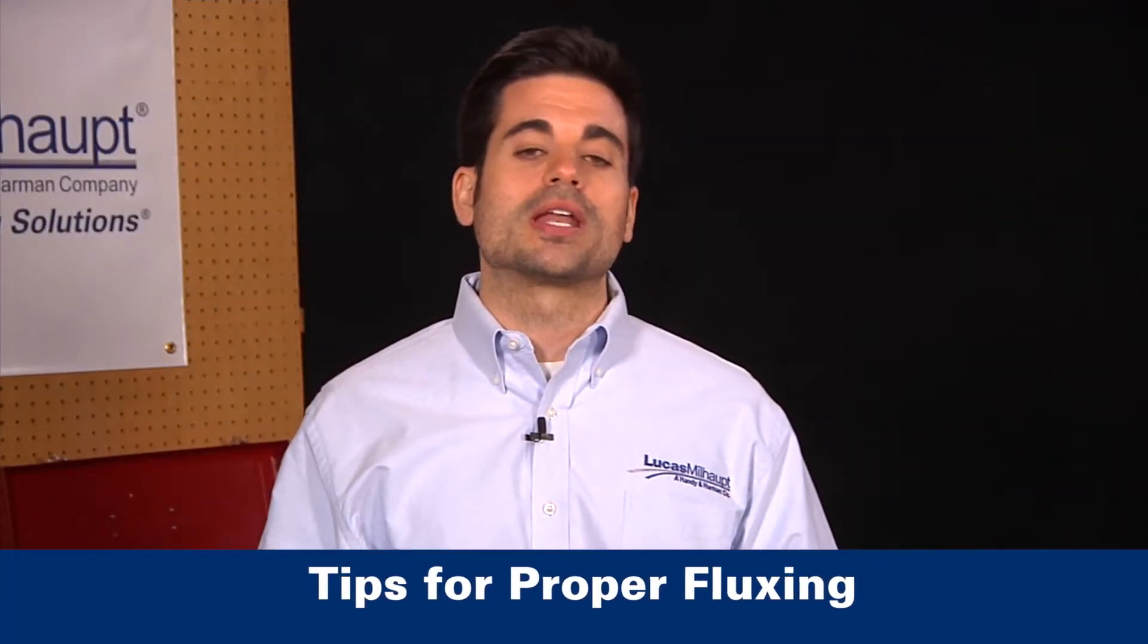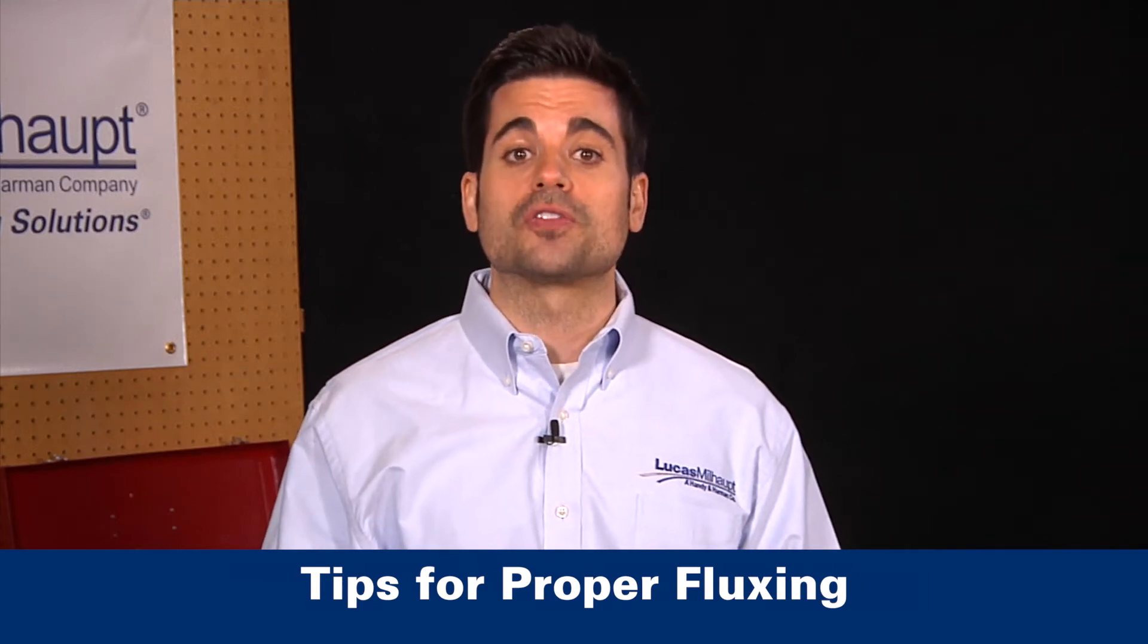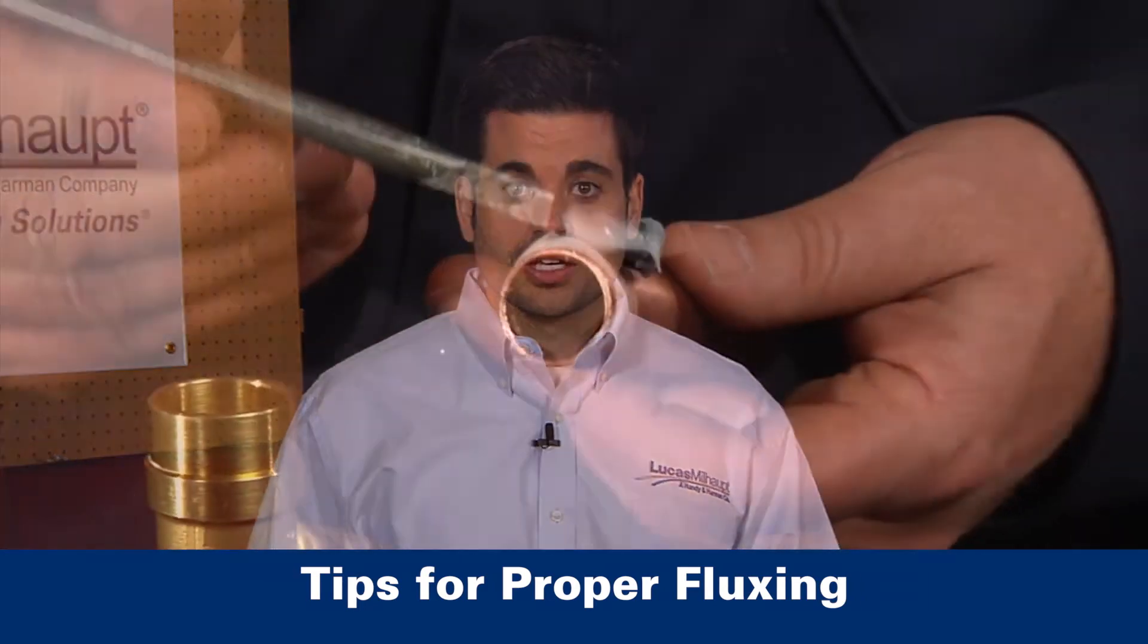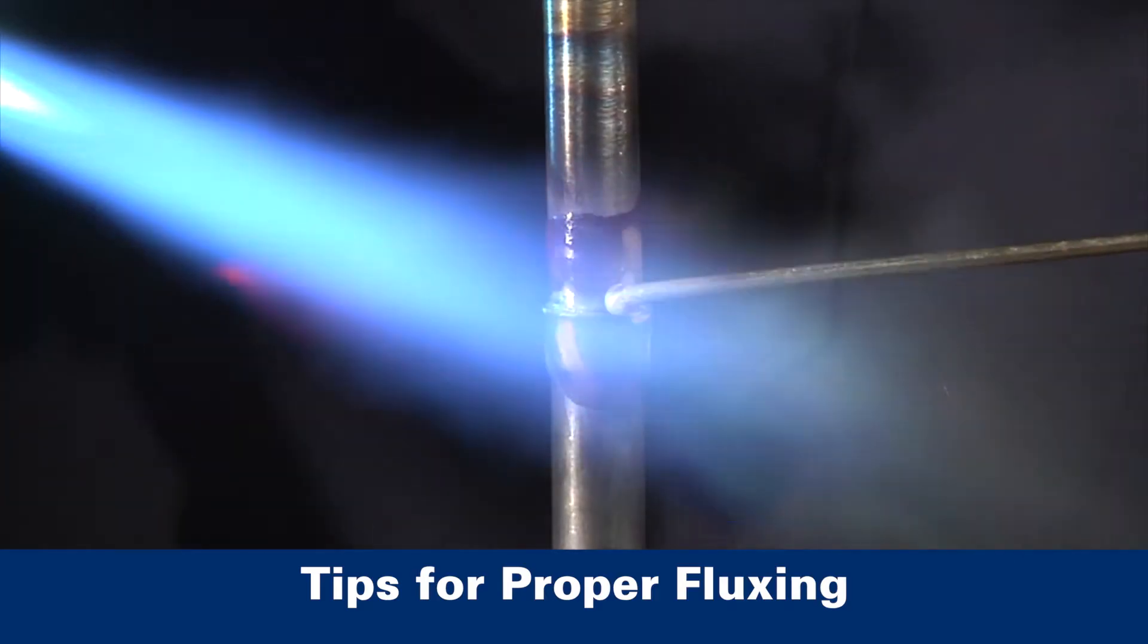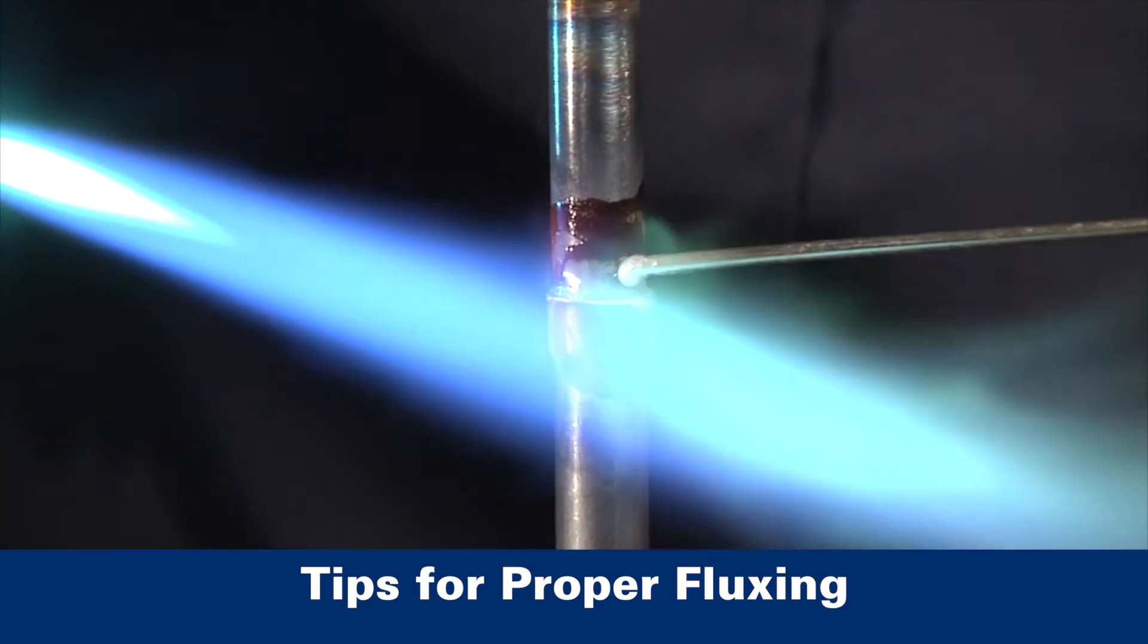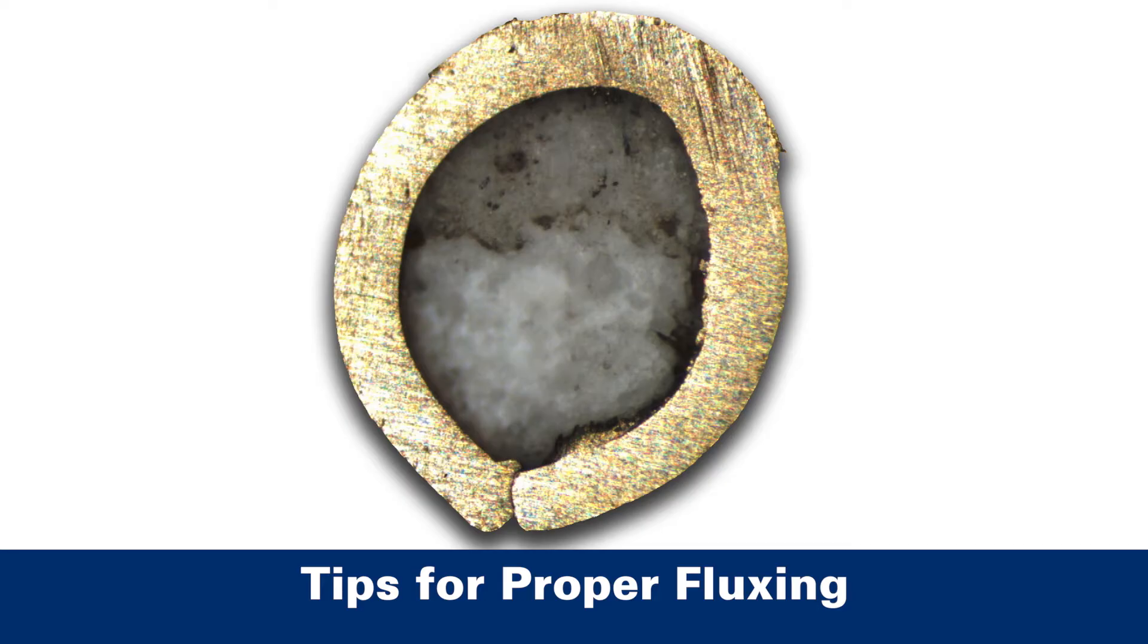You can apply flux to the joint in many ways, as long as it can flow into the complete joint. You can apply flux with a brush, or it can be incorporated directly into the filler material in the form of flux-cored or flux-coated wire or rod. No matter how you apply it, make sure excessive flux doesn't get inside the parts, otherwise it will contaminate the system.